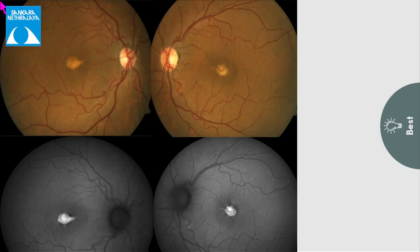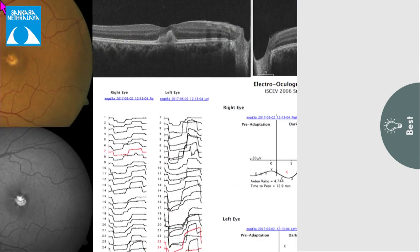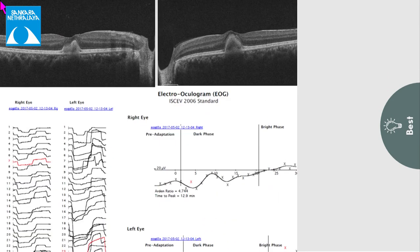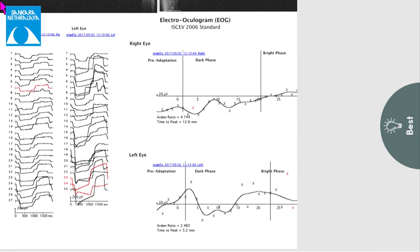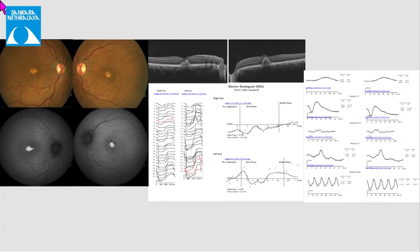This is a 50-year-old male who presented with moderate visual impairment. On fundus examination in both eyes, there were subfoveal yellowish vitelliform lesions which were hyper-autofluorescent. On OCT, there were subfoveal dome-shaped hyperreflective deposits with normal EOG, suggestive of adult-onset foveal vitelliform degeneration.